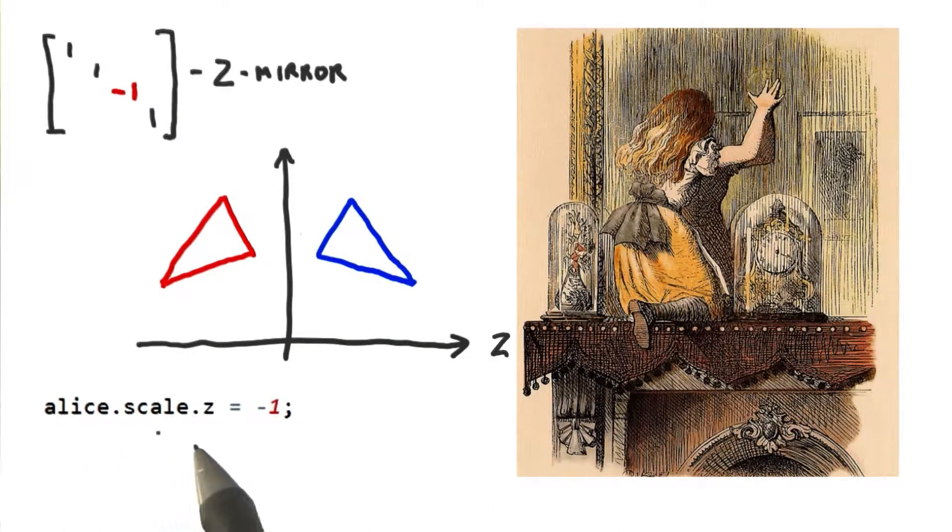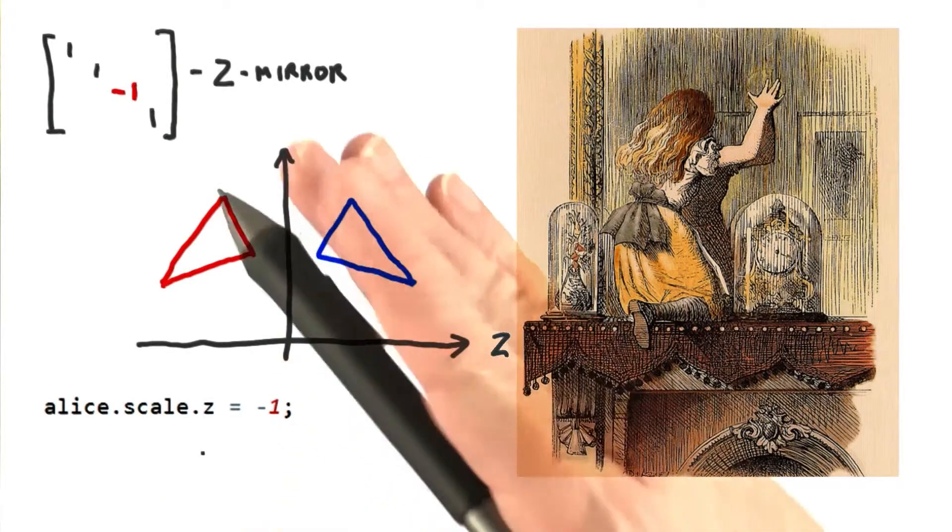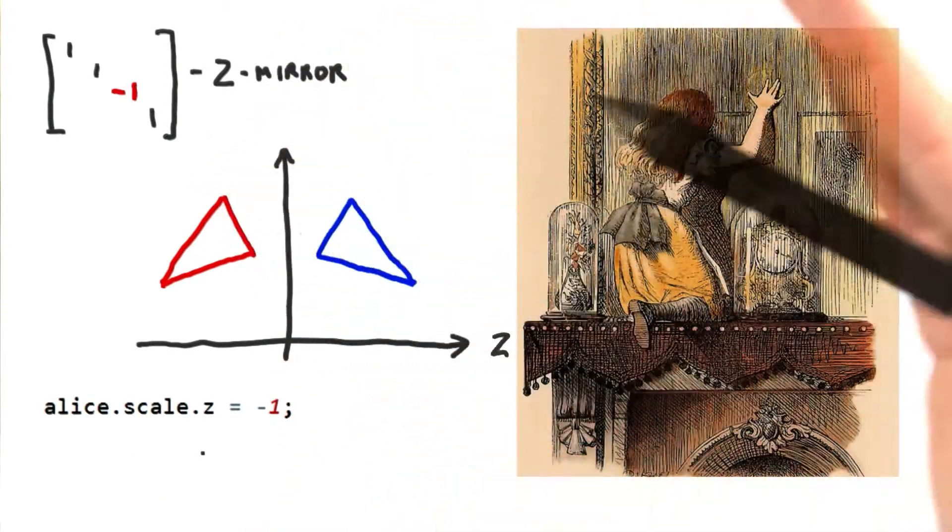You can create a mirror matrix easily enough in 3JS by setting a scale value to negative 1. There are in fact an infinite number of mirroring matrices, since by rotation and translation, you can move the mirroring plane.